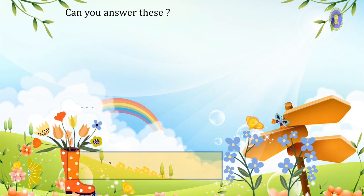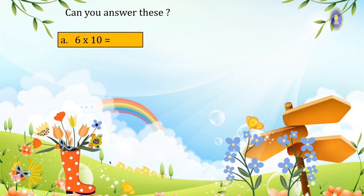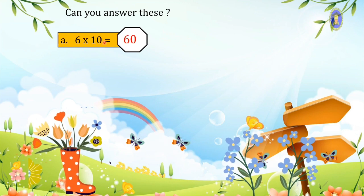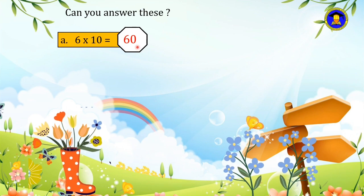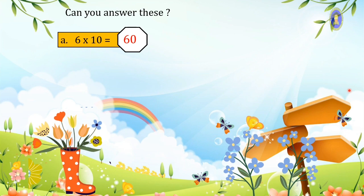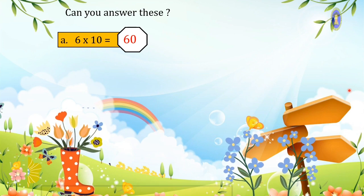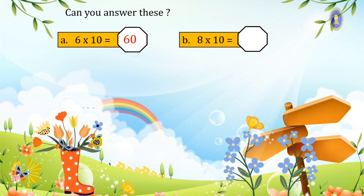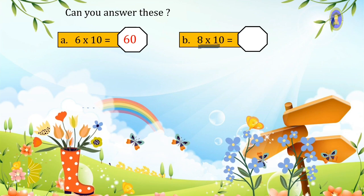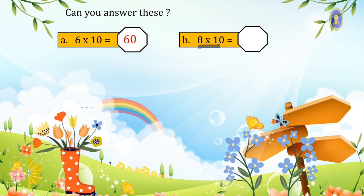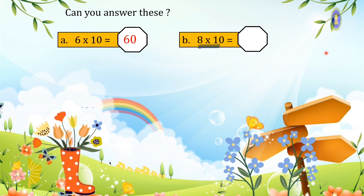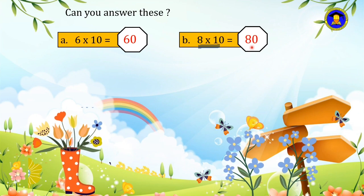Can you answer this question? Let us try: six times ten equals sixty. Six times one equals six — there is one zero at the back, so we add one zero to the answer. Here again: eight times ten equals how many? We use the one times table — eight times one equals eight — then add one zero, so the answer is eighty.